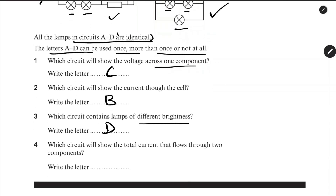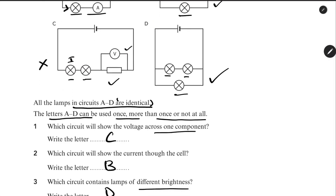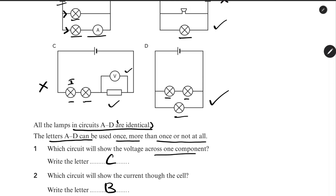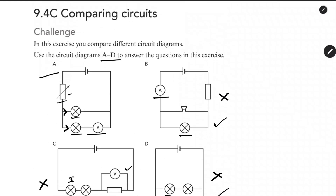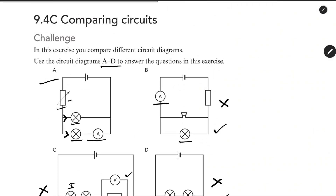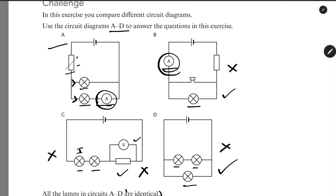Fourth question: which circuit will show the total current that flows through the components? To measure total current we use an ammeter. Both A and B have ammeters, but if the ammeter is on one branch it only measures branch current. To measure the total current from the cell, the answer is B.